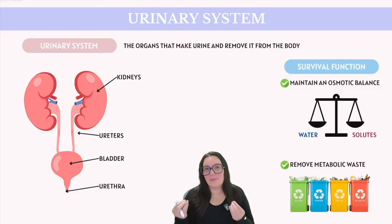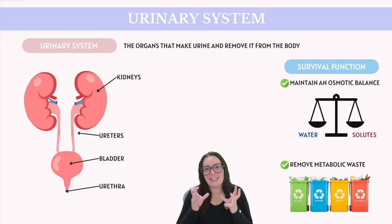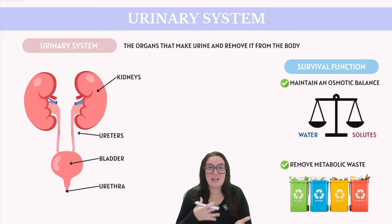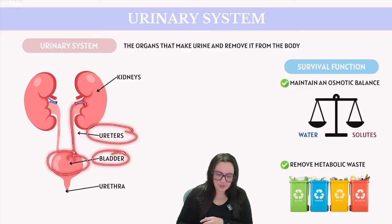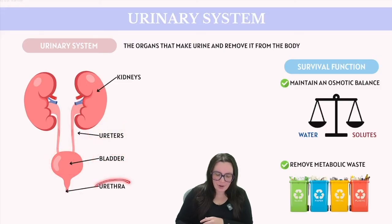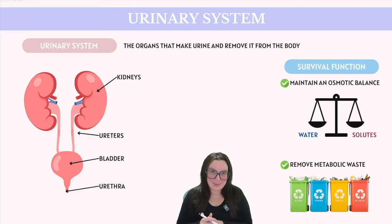The urinary system is made up of a couple different kinds of organs. We start with the kidneys, which are kidney-shaped and process all of our metabolic wastes. They lead down to the ureters, which connect to our bladder where urine is stored, and then ultimately to the urethra where urine is expelled.